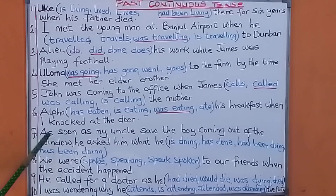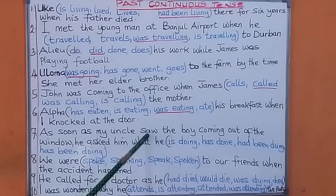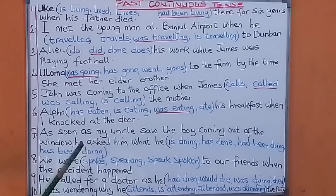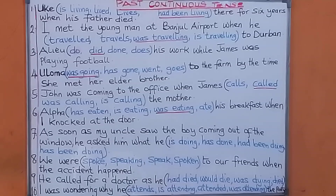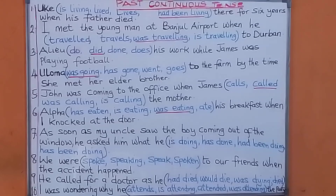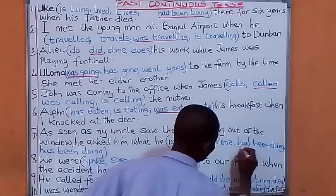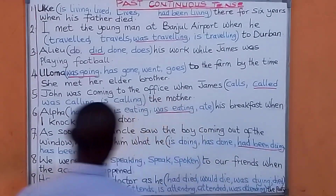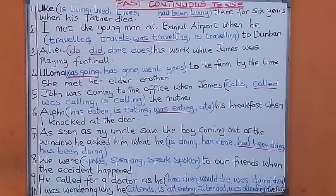Number seven: As soon as my uncle saw the boy coming out of the window, he asked — past tense — him what he — is doing / has done / has been doing. The answer: he asked him what he had been doing.